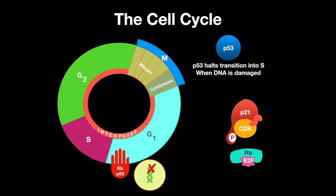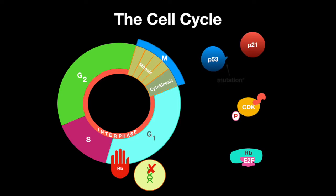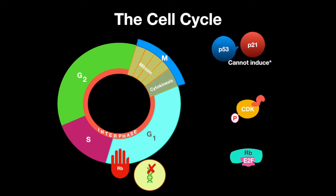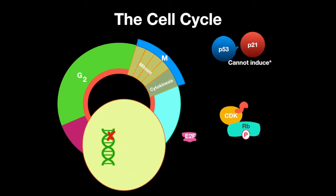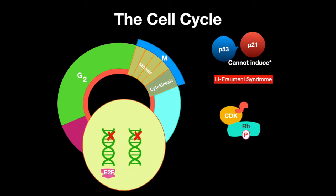Therefore, P53 halts progression into the S phase when the DNA is damaged. A mutation in P53 can result in unregulated cell division. Li-Fraumeni syndrome is a disease caused by mutated P53, and individuals with this disease are prone to developing cancer.